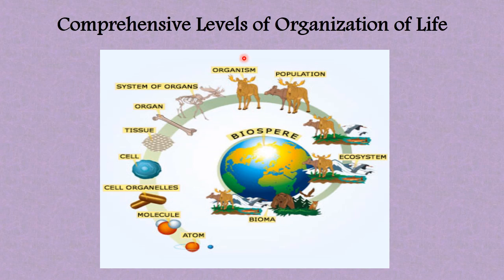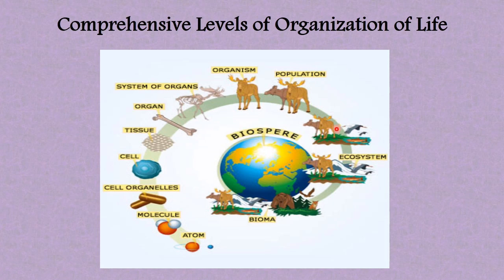Many organisms of the same species coming together to live in a particular place form the population. A community is the coming together of various species of organisms living together in a particular environment. So living things of different species coming together in a certain environment make up a community.